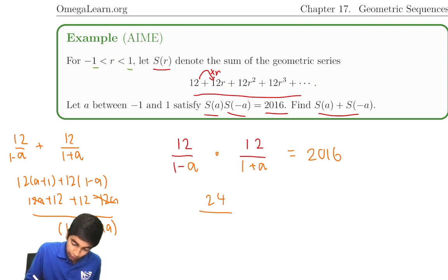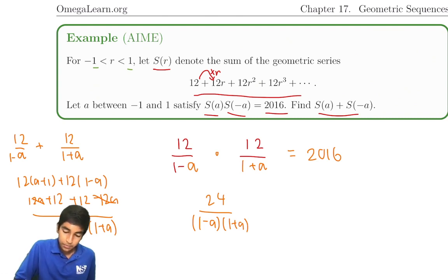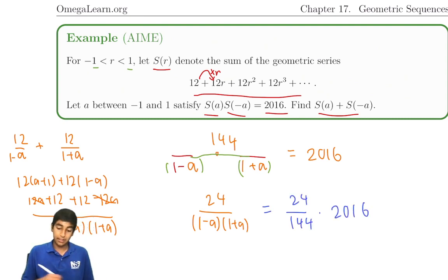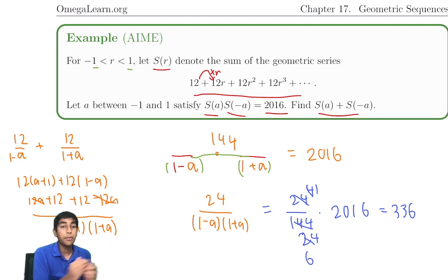We're trying to find 24 over 1 minus a times 1 plus a. We know 12 times 12 over 1 minus a times 1 plus a is 2016. Can we just look at what we have and what we need? First of all, 12 times 12 is 144. These things look very similar. This is just 24 over 144 of this thingy. So this is 24 over 144 times 2016. Let's cancel out a factor of 6. This becomes 1 6. 1 sixth of 2016 is 336. You can do this by seeing 2016 is 1,800 plus 216. 1,800 by 6 is 300. 216 by 6 is 36. Add them up, 336. That's the answer for this problem.